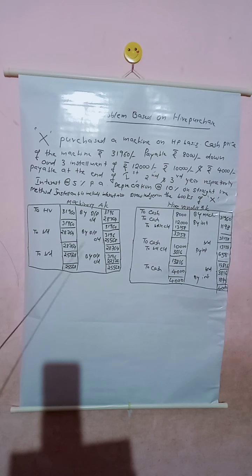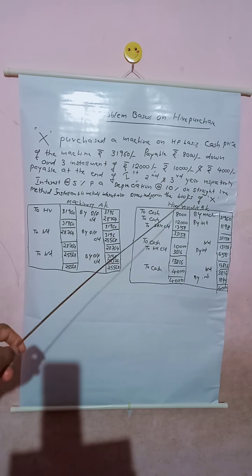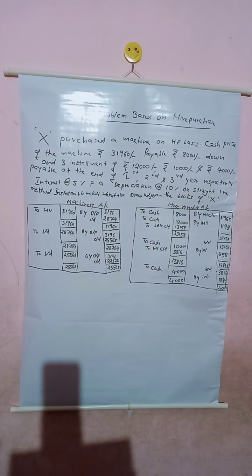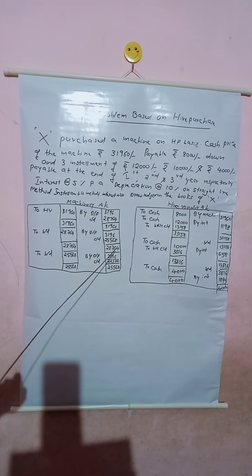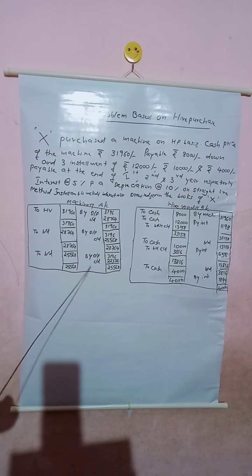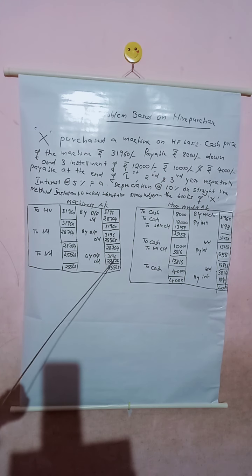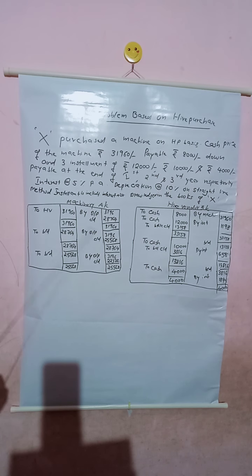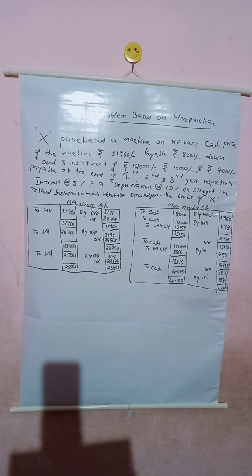In the second year, the depreciation on straight line basis will be the same amount. So by depreciation Rs. 3,196. Then by balance carried down Rs. 25,568. So the machinery account balance at the end of second year is Rs. 25,568. The machinery account in the books of hire purchaser is now complete.